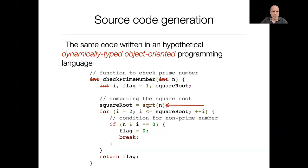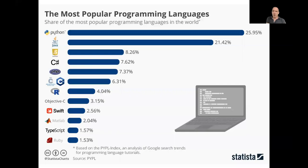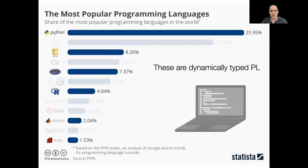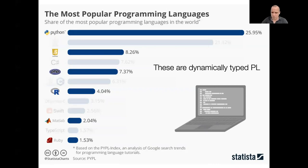Dynamically typed object-oriented programming languages are very common today. Looking at the list of the most popular programming languages currently used, many of them are dynamically typed and also object-oriented. Currently, we do not know whether we can apply genetic programming to generate source code for those languages — we know it works for C, but not whether it generalizes to these languages.